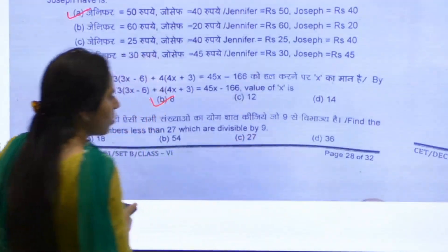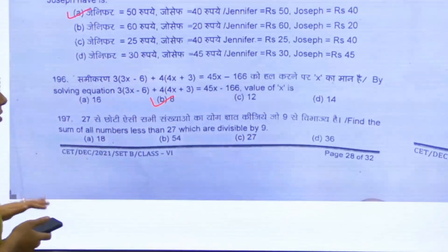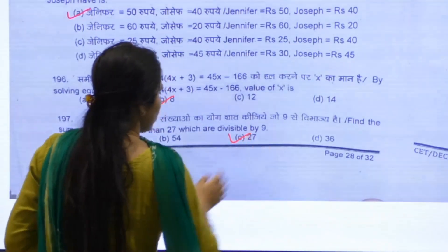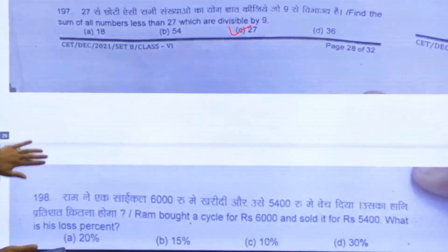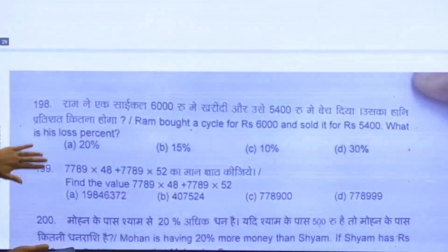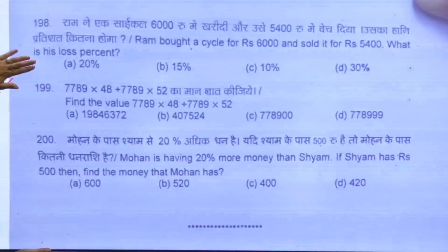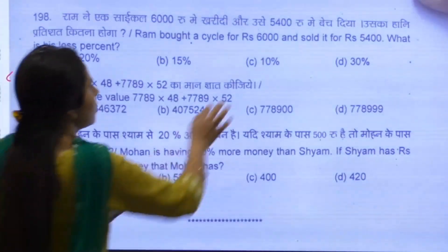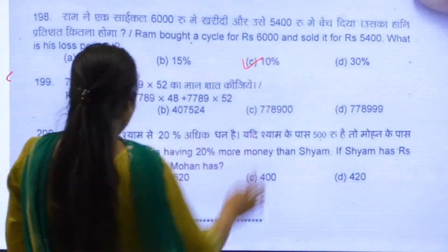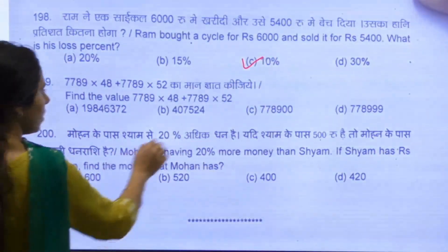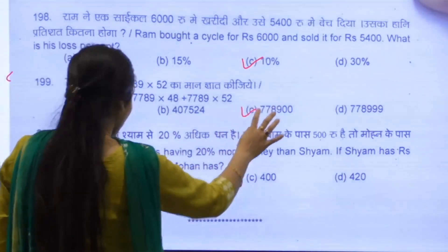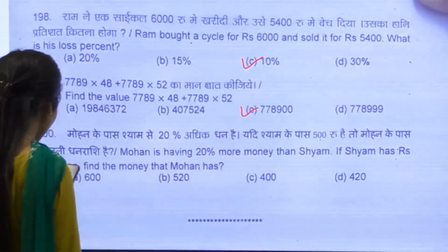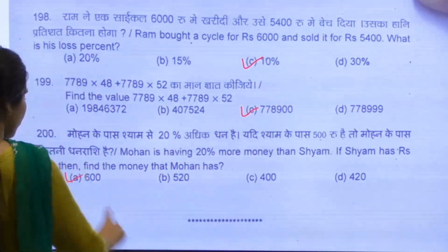This is 197. C is your answer. Then coming back to 198, we have C as your answer. 199 is C. And coming to 200, we have A as the answer.